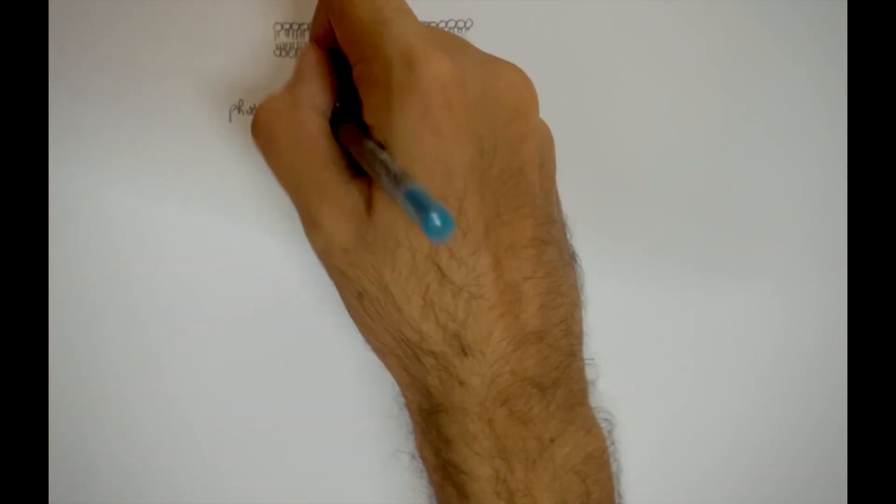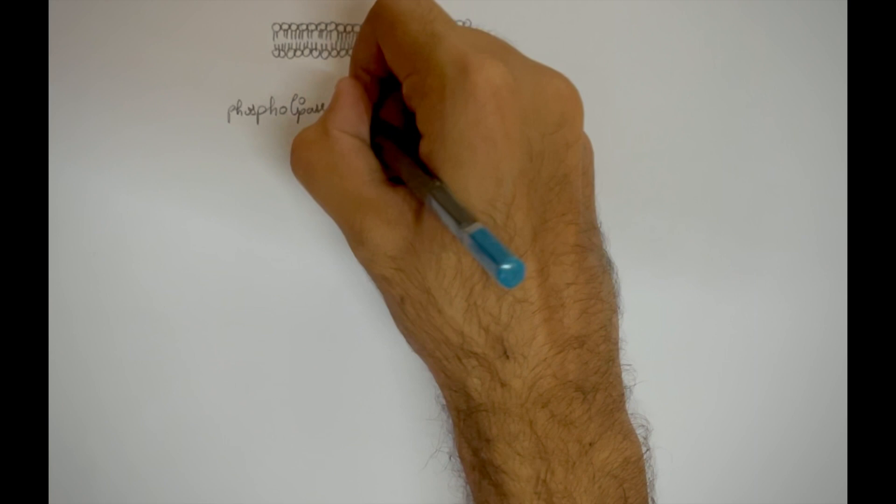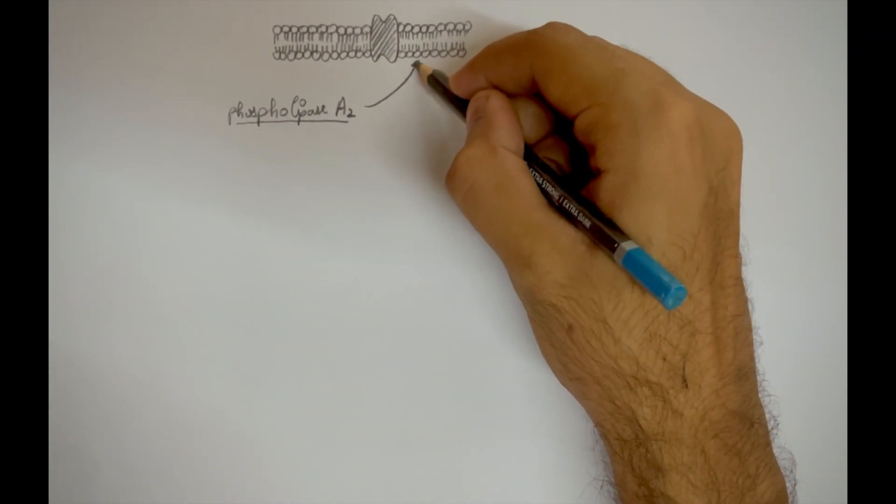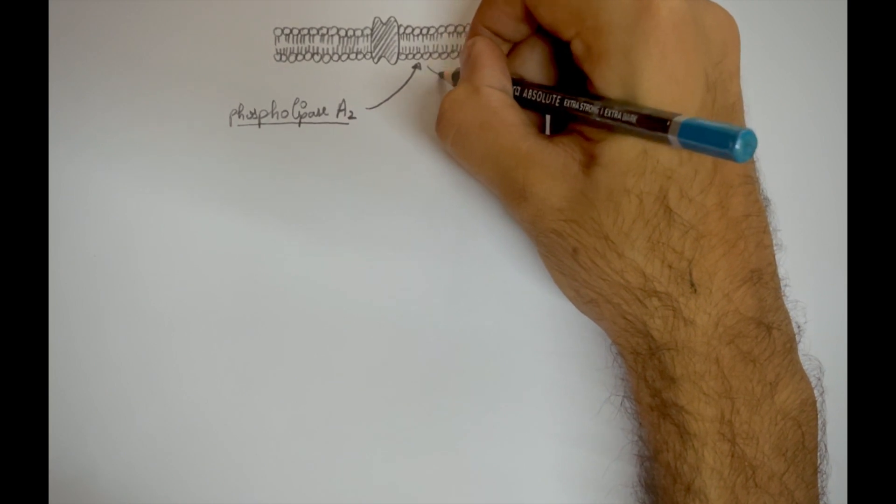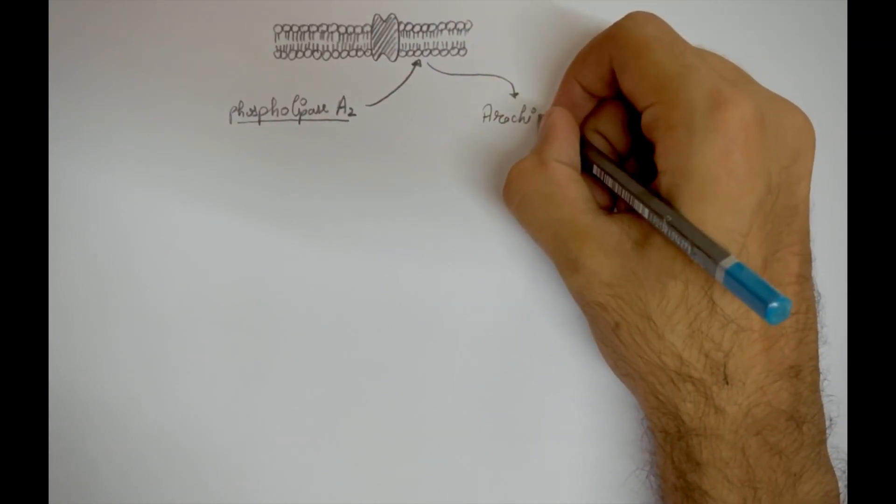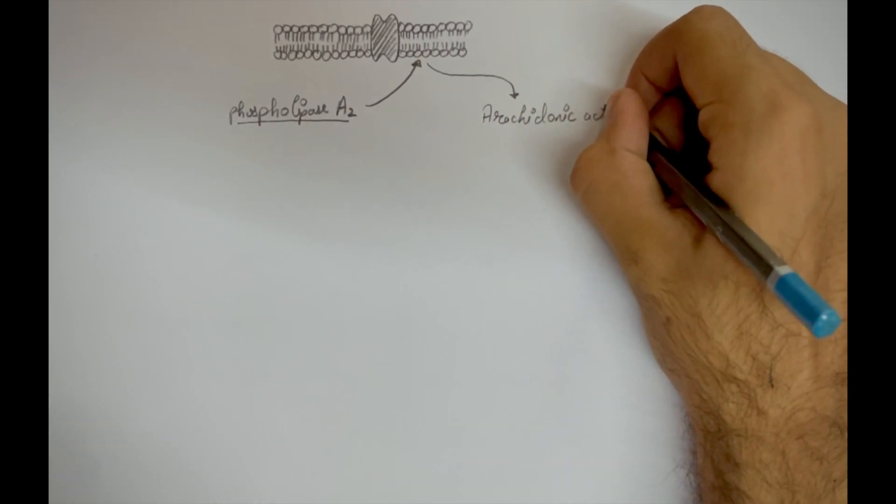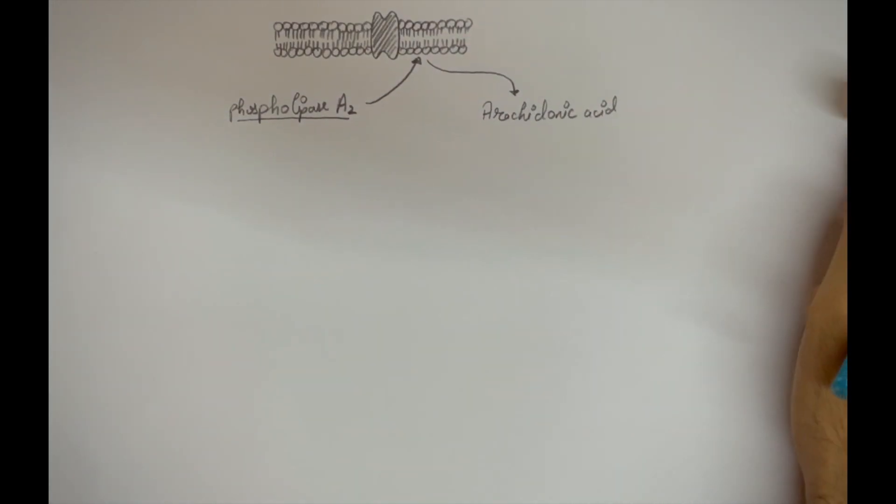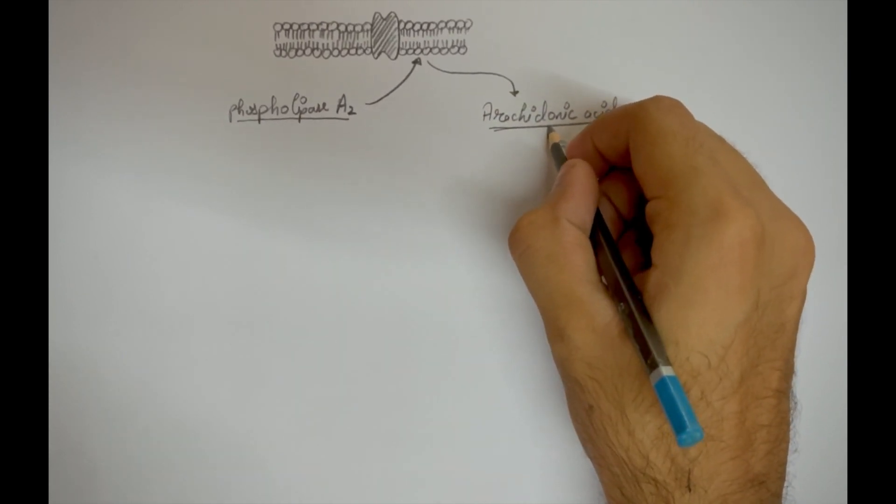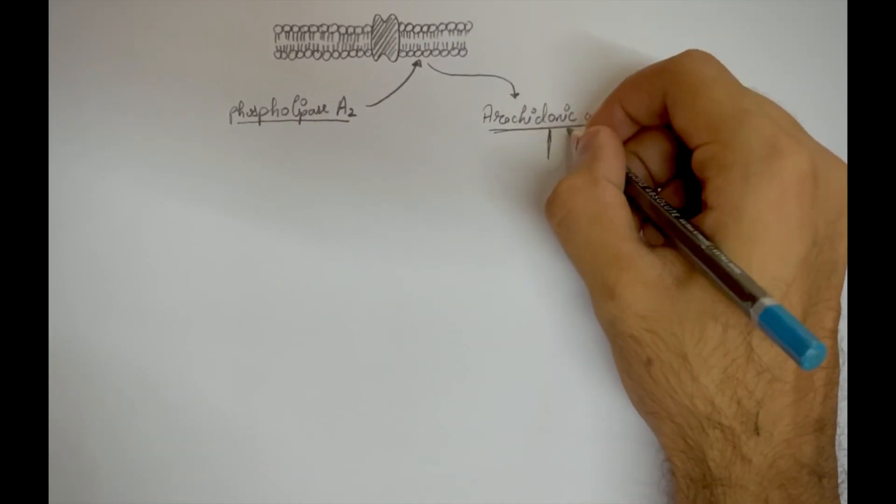Prostaglandin synthesis begins with the enzyme phospholipase A2. Phospholipase A2 acts on the cell membrane and cleaves out a semi-essential fatty acid termed arachidonic acid. Arachidonic acid is chemically termed icosatetraenoic acid since it has 20 carbon molecules with 4 double bonds.